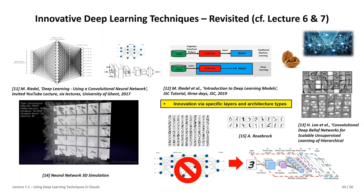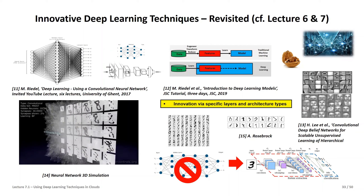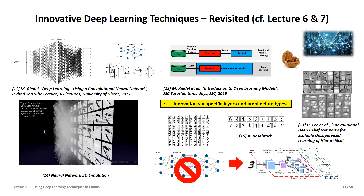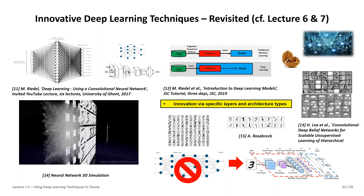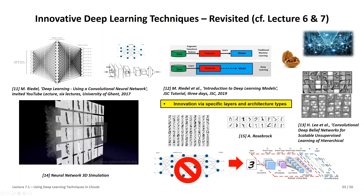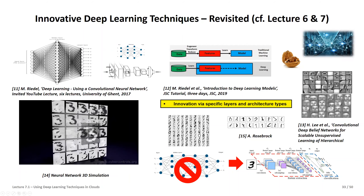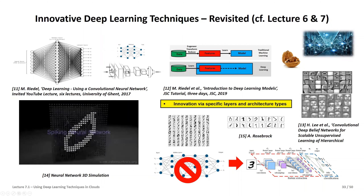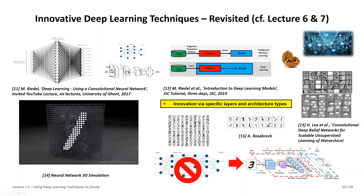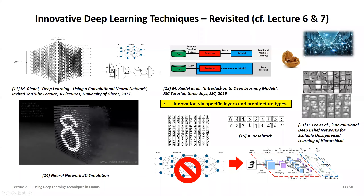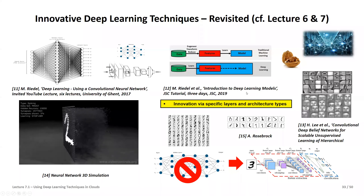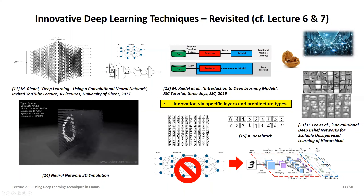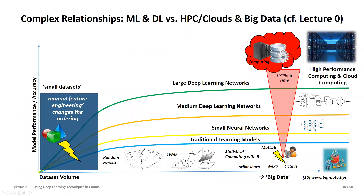We are only touching supervised learning here; there is a lot in unsupervised learning as well, but we cannot cover everything. I want to point again to the YouTube lecture series covering three days of material where you can get deeper details. We have seen small networks, and now we understand this picture better: with big data, serial tools don't make sense anymore.